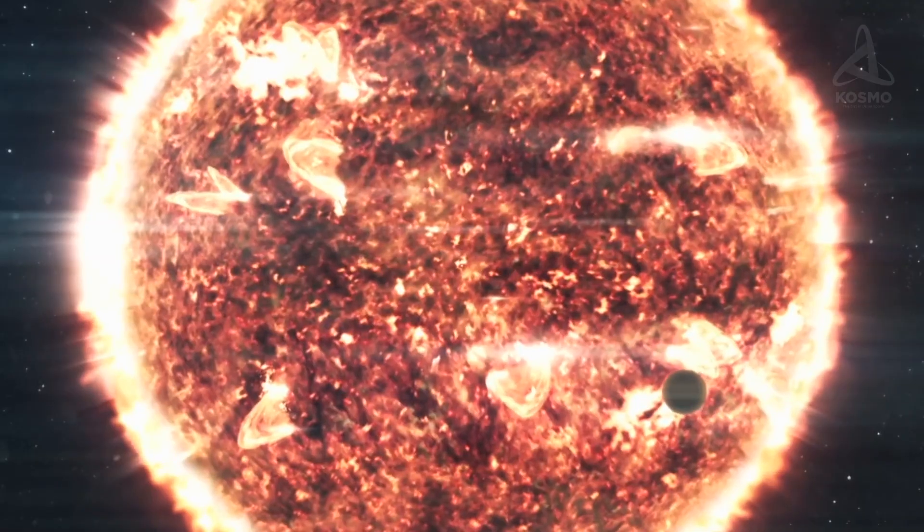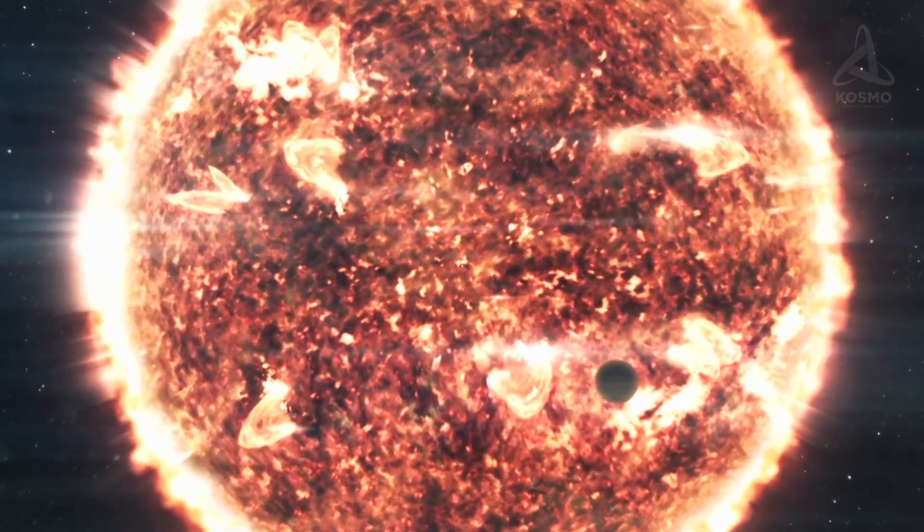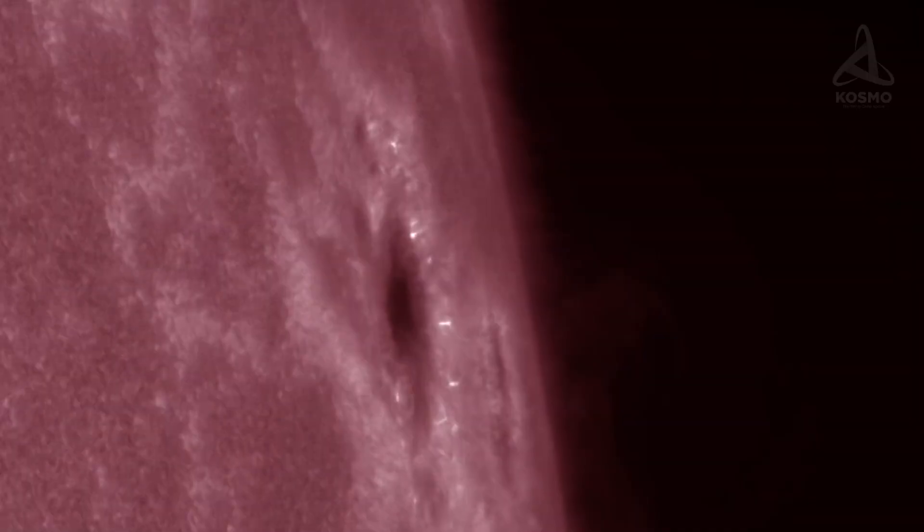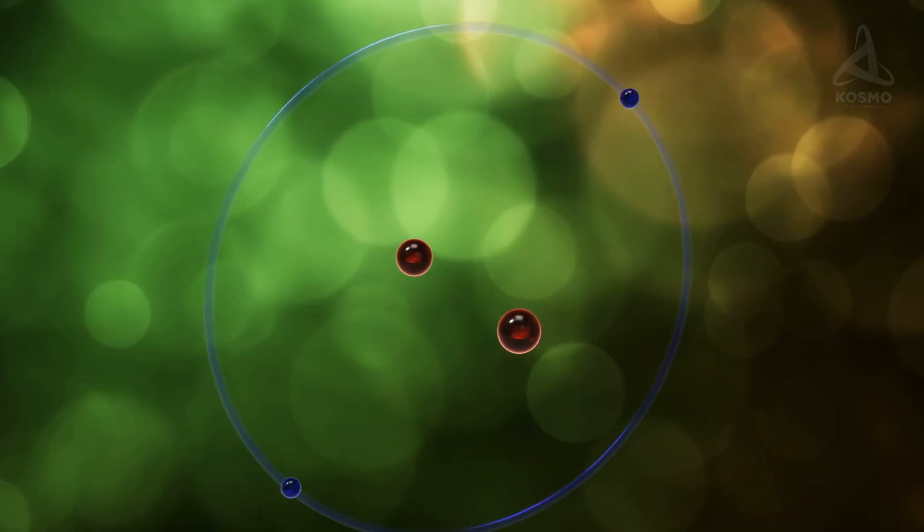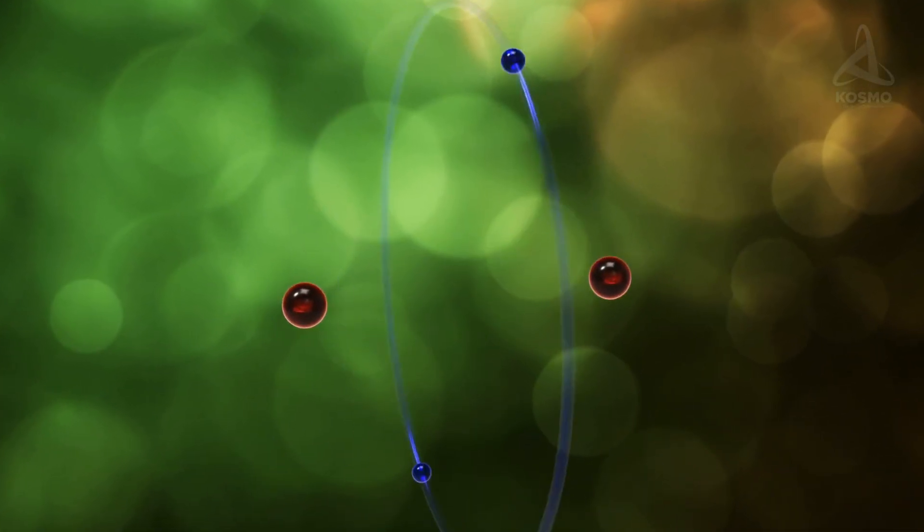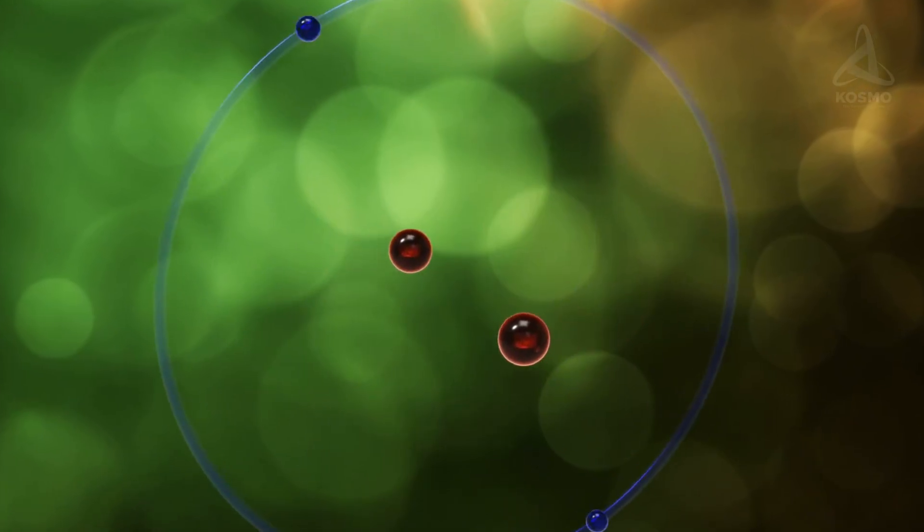As for the temperature of the coolest main sequence stars, it is so high that electrons leave their nuclei, and thus the substance turns into scorching plasma. Even the simplest two-atom molecules like hydrogen cannot endure this harsh environment.